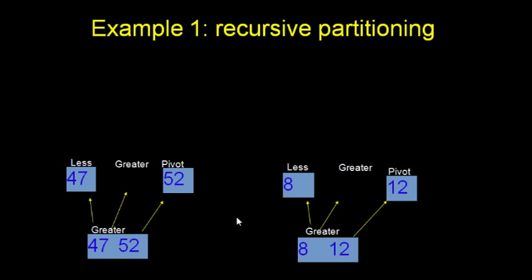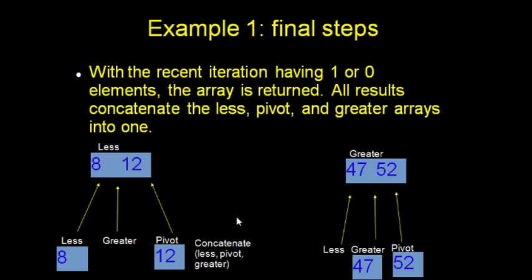And at the end, we should have individual elements that are pretty well sorted. And when we are done, when all the elements are in lists of only 1 or 0 elements, then we just return back that array. And all the elements will concatenate in the order that they were separated in. So we would first combine the less than array, the pivot, and the greater than array.